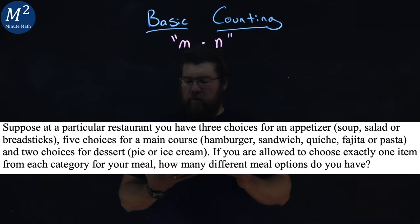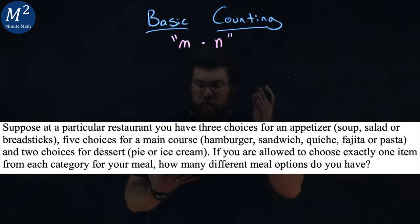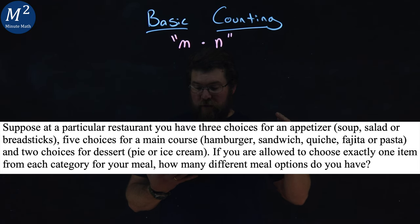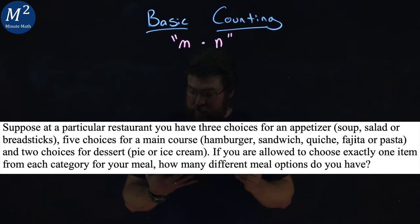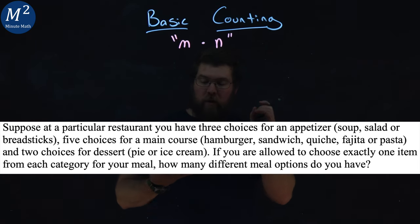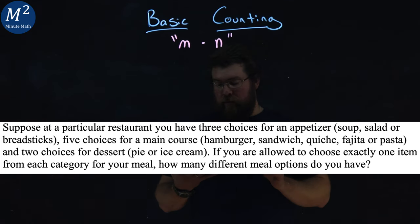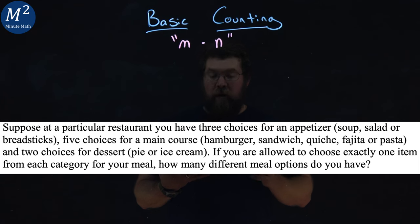Suppose at a particular restaurant, you have three choices for an appetizer: soup, salad, or breadsticks. Five choices for the main course: hamburger, sandwich, quiche, fajita, or pasta. And two choices for dessert: pie or ice cream. If you are allowed to choose exactly one item from each category, how many different meal options do you have?